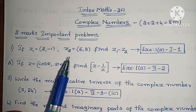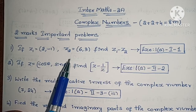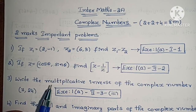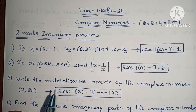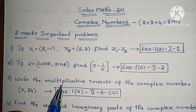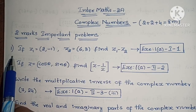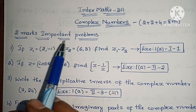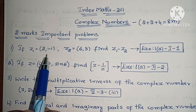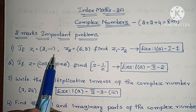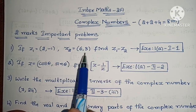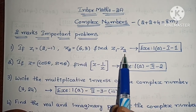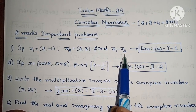I will open the first comment in the description and open the solution to the first one. First, 2 marks important problems. If z1 equals 2 minus i and z2 equals 6 plus 3i, find z1 minus z2.